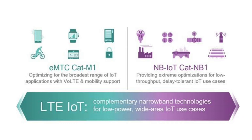Both of these technologies on the surface seem to achieve the same thing, but in fact they are targeted at different applications. Cat M1 or LTE-M is designed mainly for higher throughput devices that will be mobile, while NB-IoT is targeted more at stationary devices with very low throughputs. For example, electricity meters, gas meters, water meters, parking spots, and parking meters would be ideal NB-IoT applications.